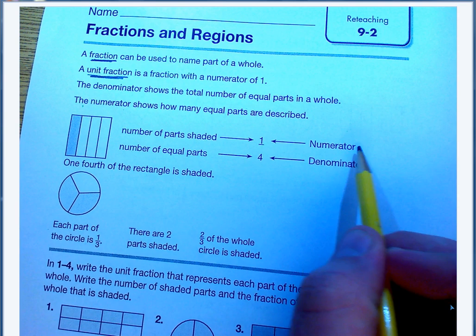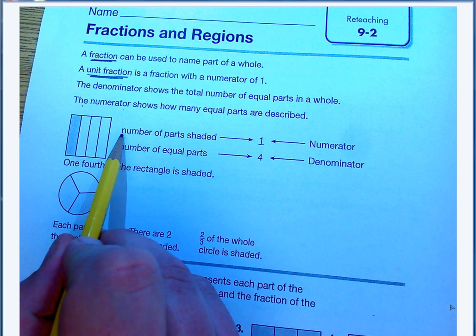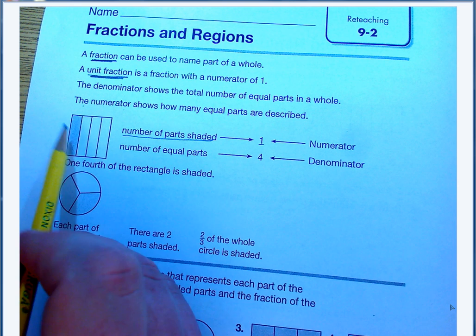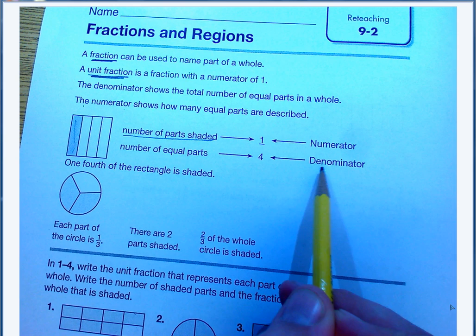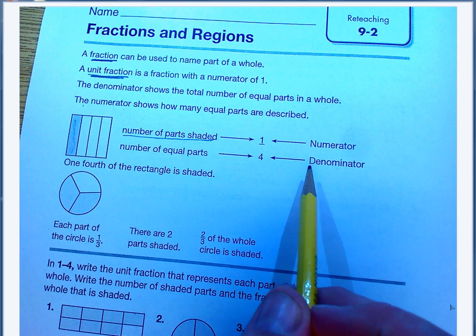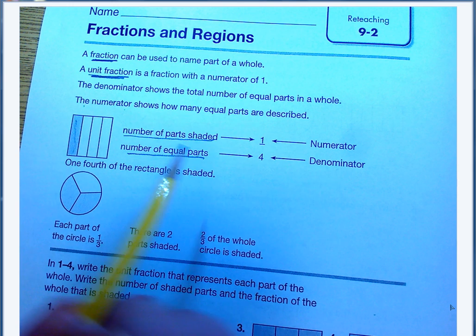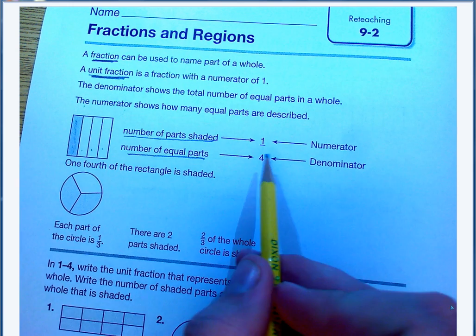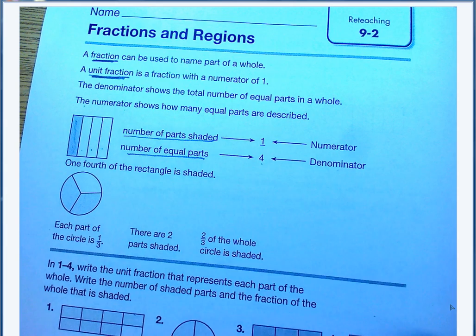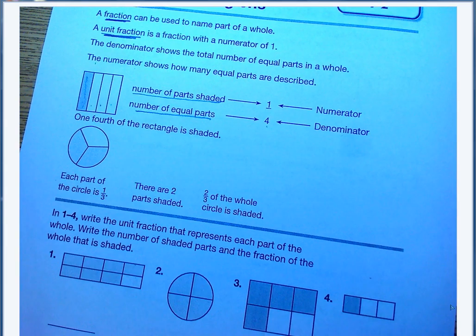That numerator is the top number you can see. It's the number of parts shaded, so you can see there's only one shaded here. The denominator is the bottom number, and that's the number of equal parts. You can see there's one, two, three, four parts total here, so you can see that four on the bottom. One-fourth of that rectangle is shaded.